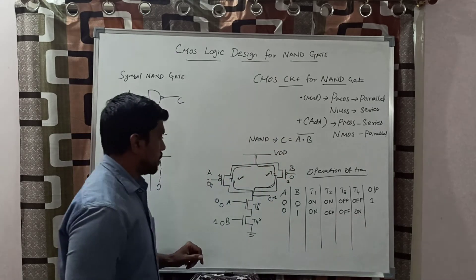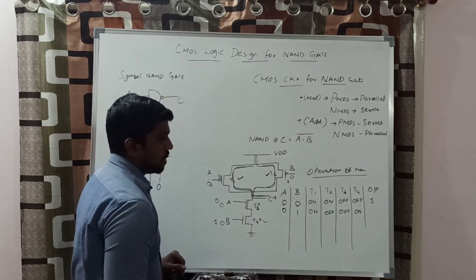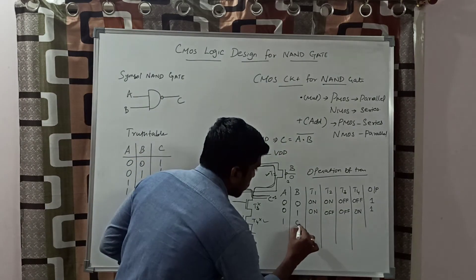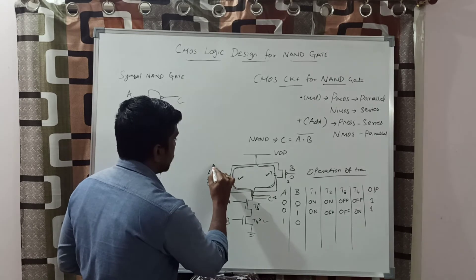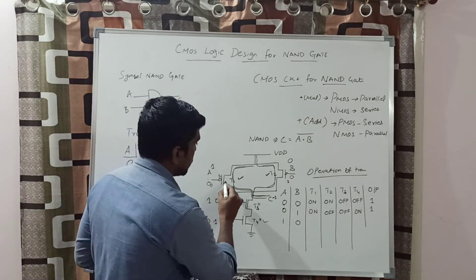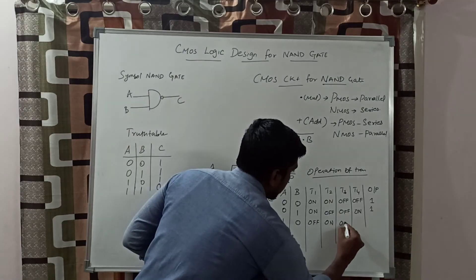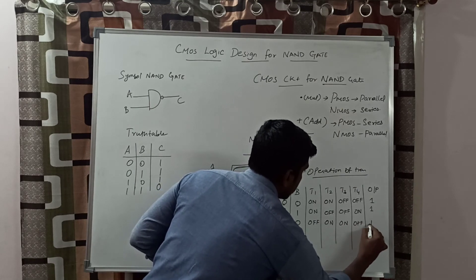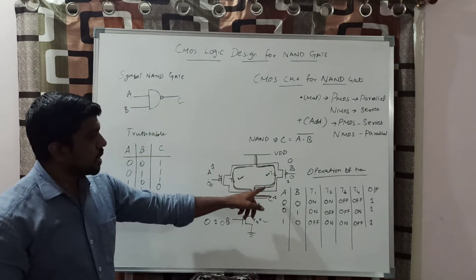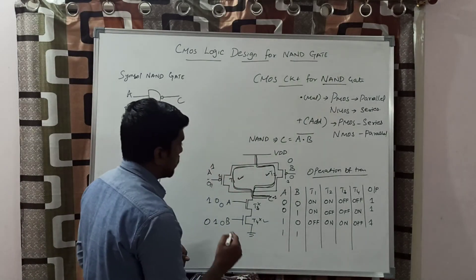T4 is on, T3 is off. VDD connects through T1 and the result is 1. Third condition: A=1, B=0. T1 is off, T2 is on, T3 is on, T4 is off. VDD connects directly to the output through T2, giving a final result of 1.